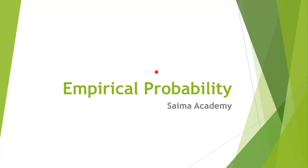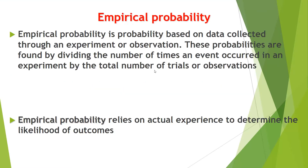In this lesson I will explain empirical probability. Empirical probability is the probability based on data collected through an experiment or observation. This is the most important point: we collect data through experiments or observations, not on the basis of estimation or approximation.